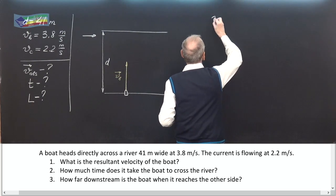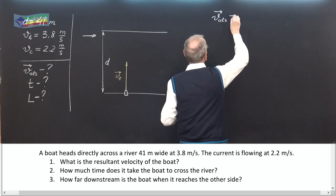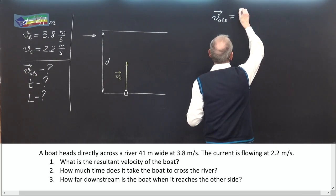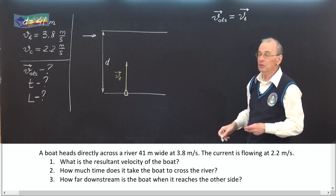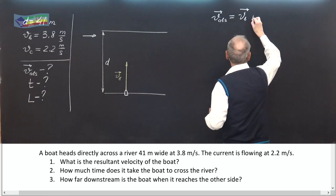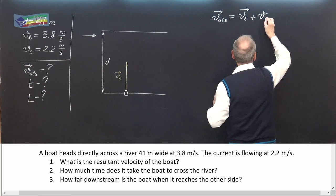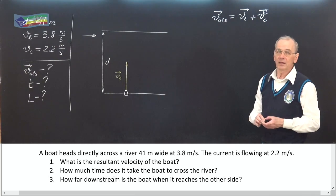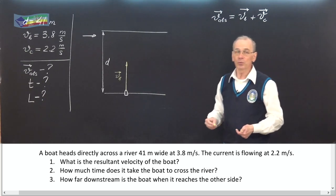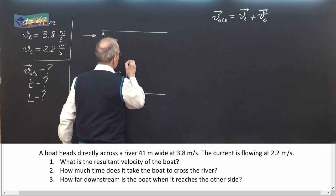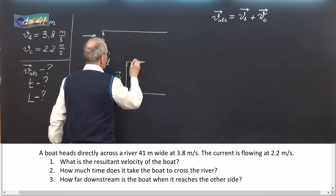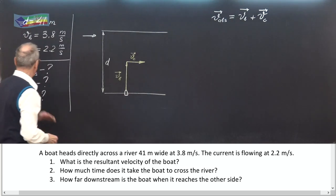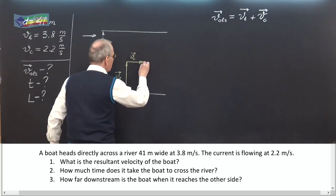At the same time, the current drifts the boat downstream at speed Vc. So, the absolute velocity V is the vector sum of two velocities: the velocity of the boat relative to the stream, plus the velocity of the stream relative to the Earth. We add these two vectors using the rule of triangles. V current is here, and the resultant absolute velocity is this vector.